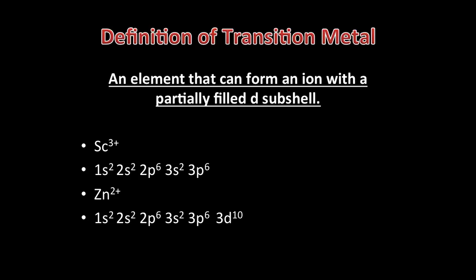There is a difference between D-block elements and transition elements. A D-block element has its outer electron in a D subshell, so scandium through to zinc are all D-block elements. However, the definition of a transition element is that it forms an ion with a partially filled D orbital. Only titanium to copper are known as transition elements in period 4, as they have ions with an incomplete D subshell. Scandium only forms a 3+ ion and zinc only forms a 2+ ion, which means they both lose electrons from the 4S subshell first, leaving either an empty or a full D subshell, so they don't classify as transition elements.